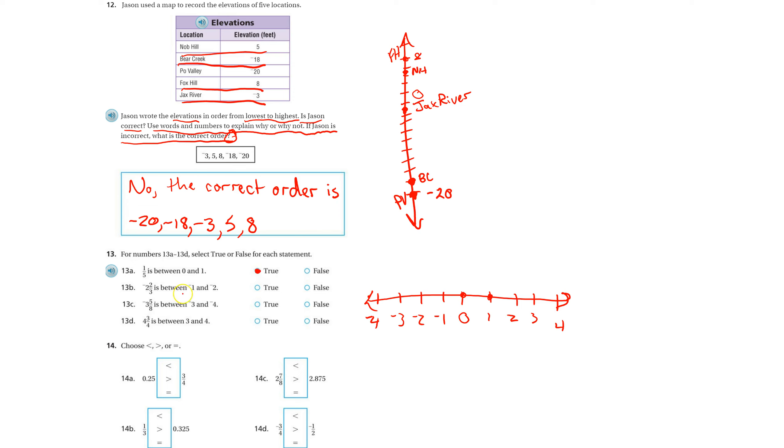Negative two and two-thirds is between negative one and negative two. Here's negative one, here's negative two. Negative two and two-thirds is going to be negative two and some more, so it's going to be over here, outside of that limit. So that is false.